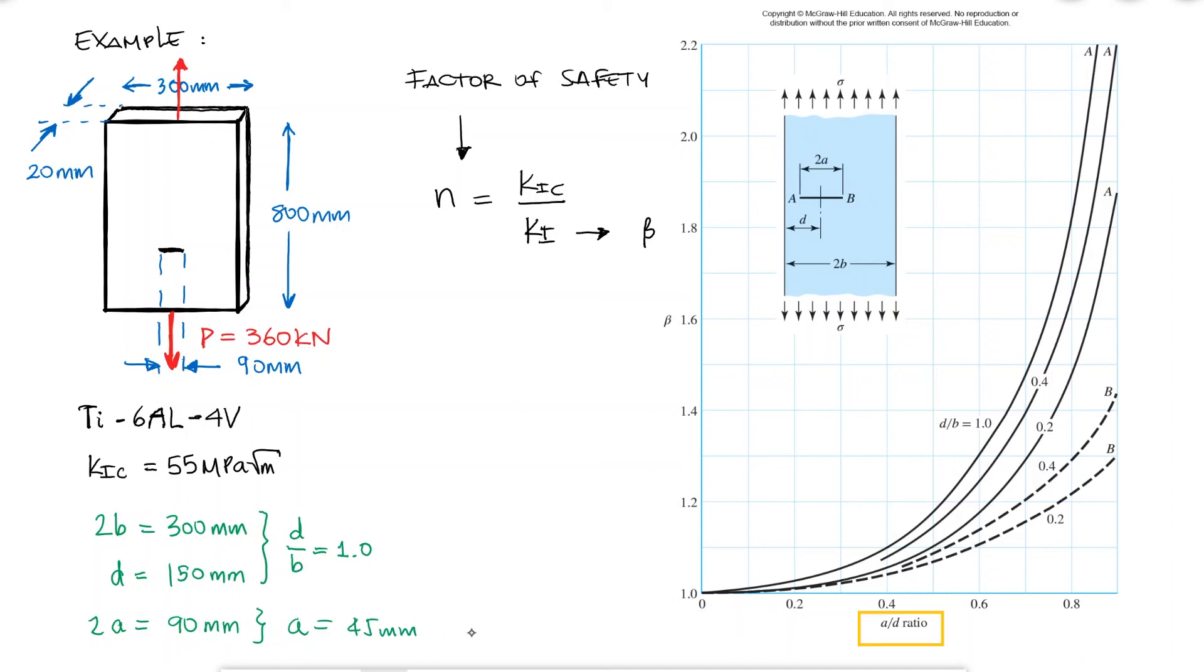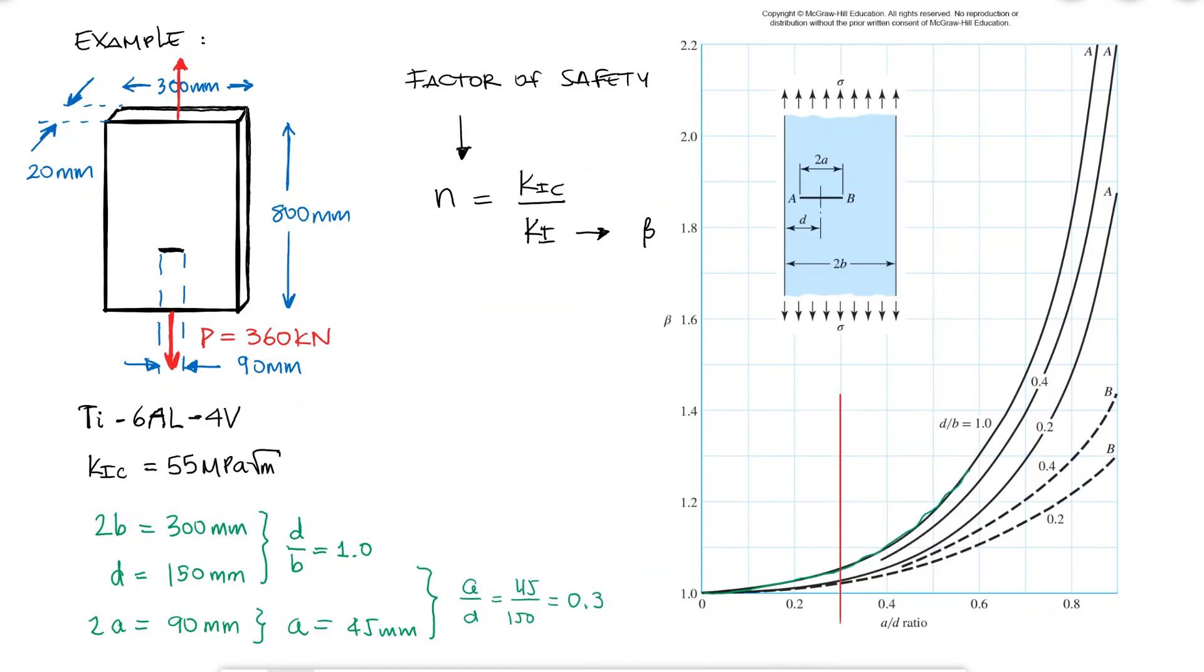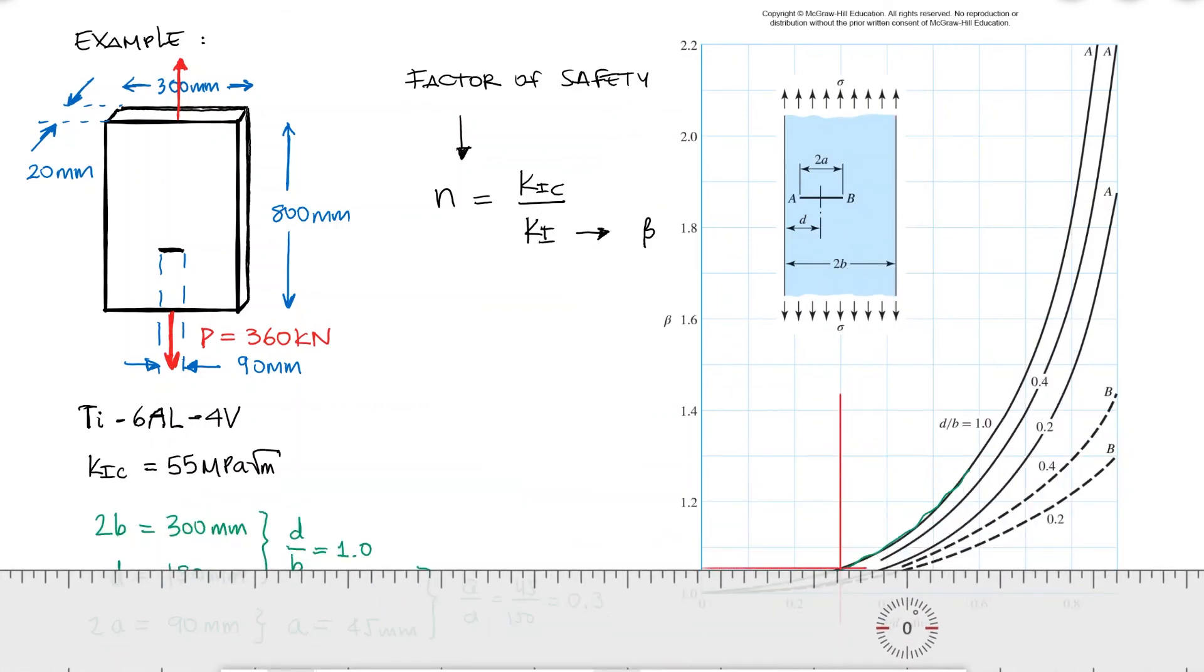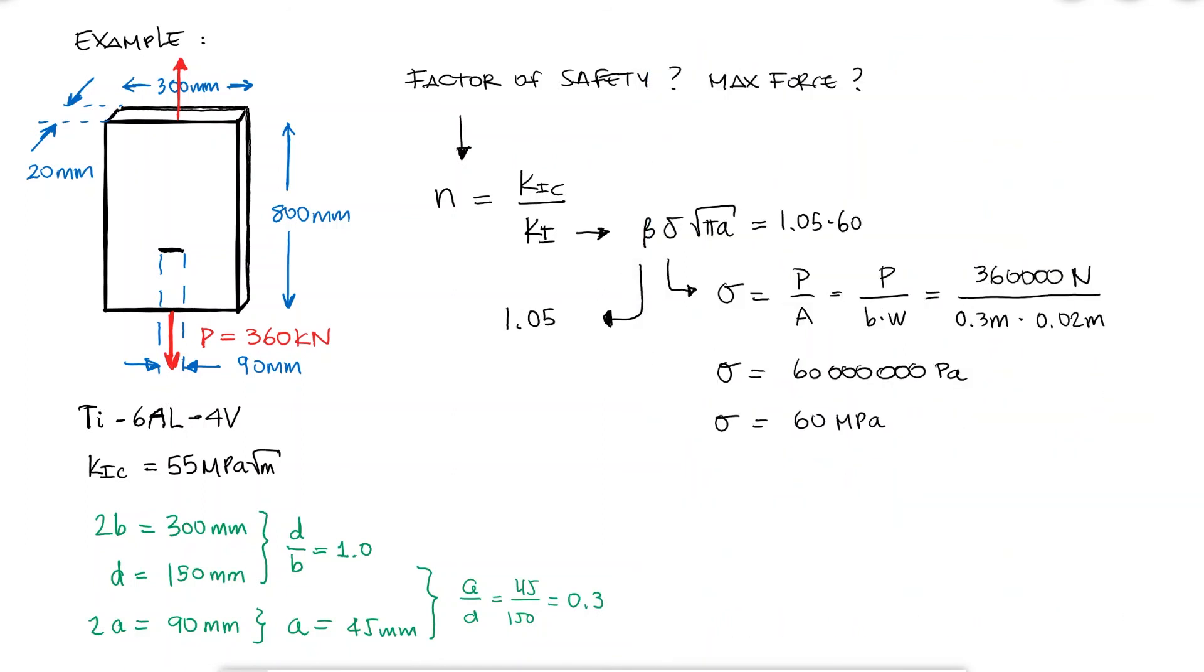Notice that the x-axis is the a over d ratio, which in this case would be 0.3. Using the top curve for d over b equal to 1 and an x value of 0.3, I would find that my stress intensity modification factor is equal to 1.05. With these values, I can calculate the stress intensity factor and by using the fracture toughness over that value, I can find the factor of safety.